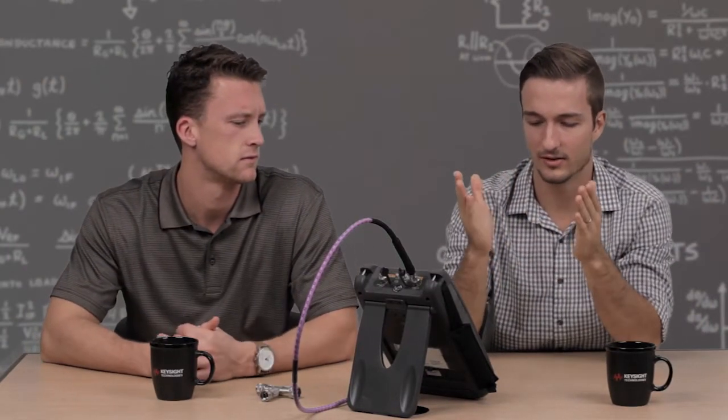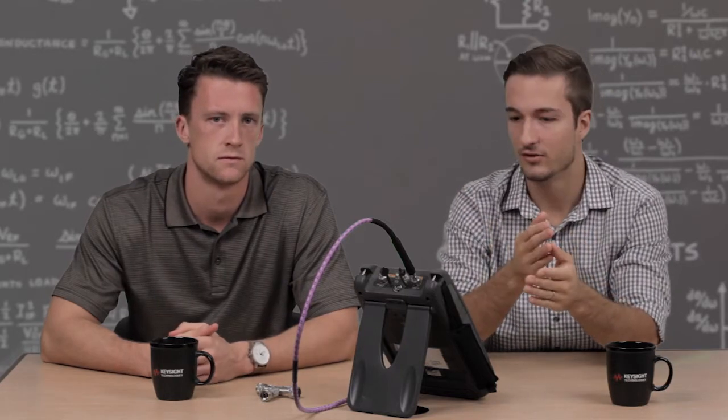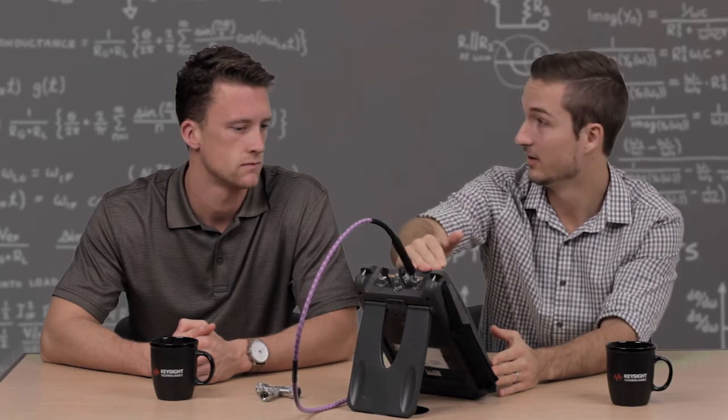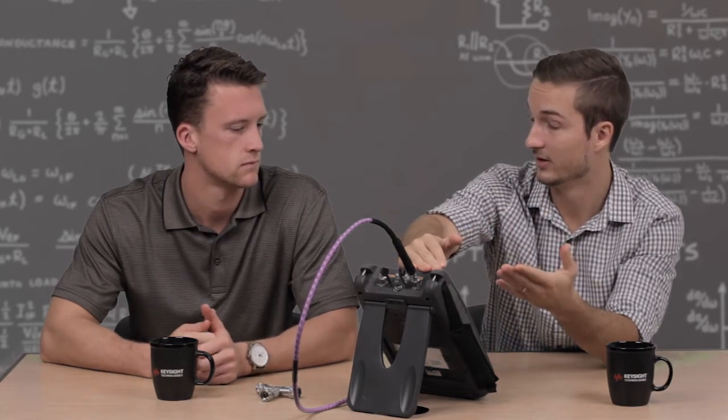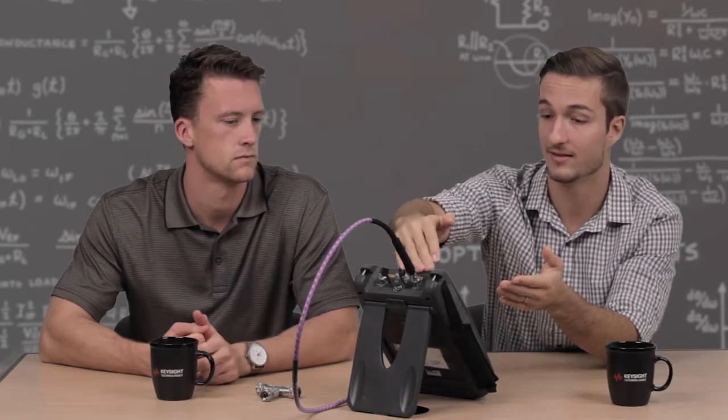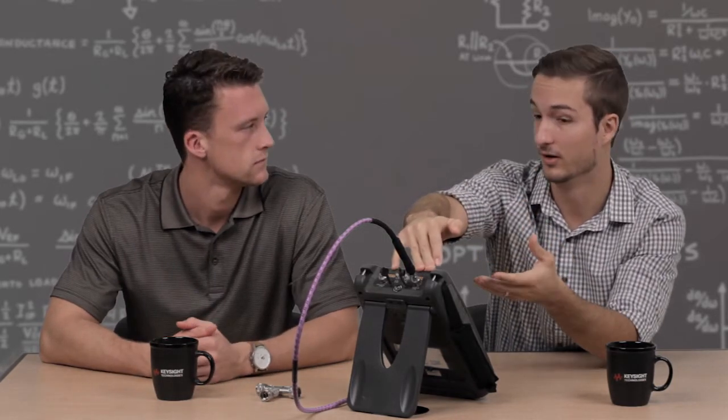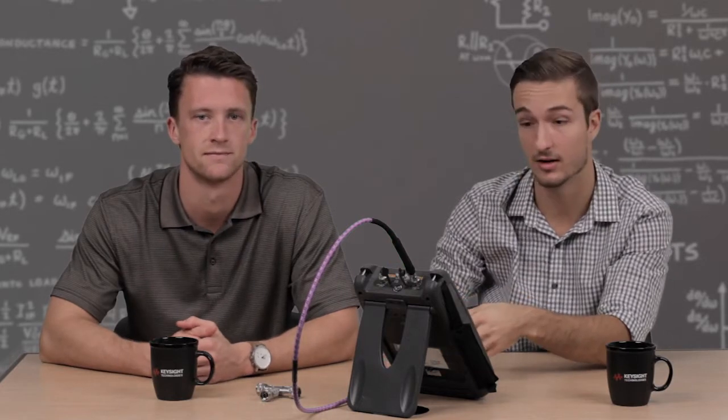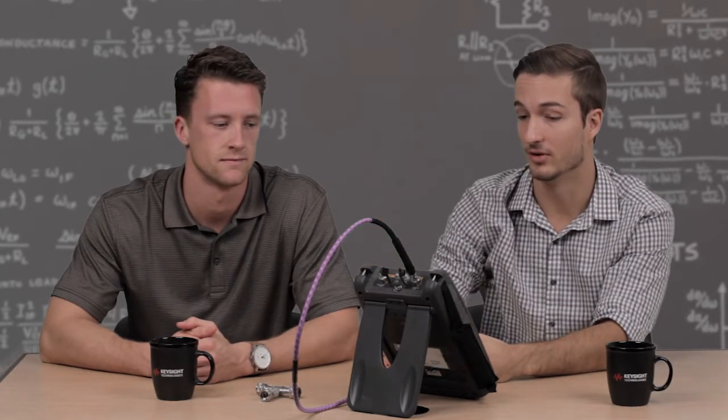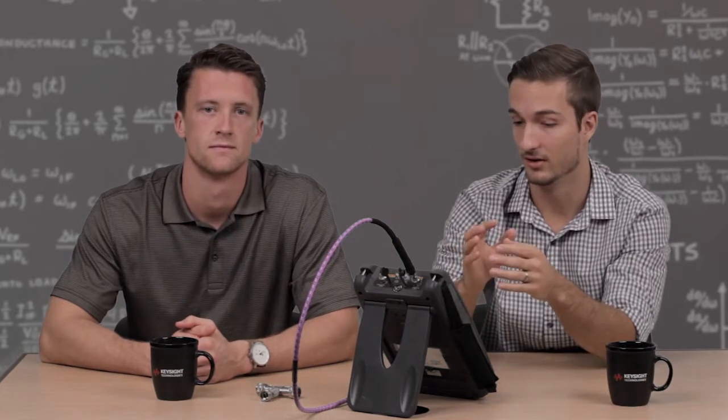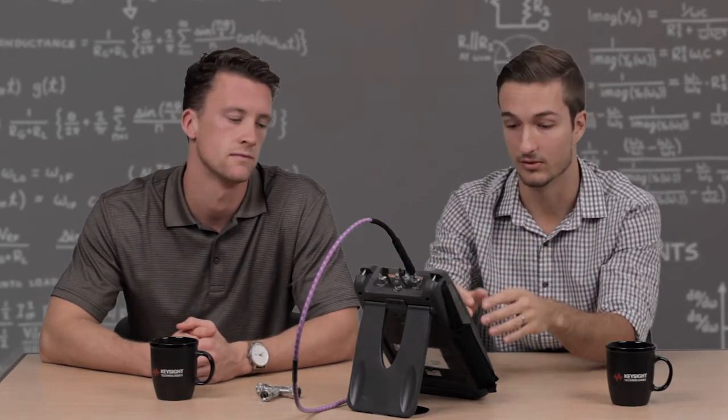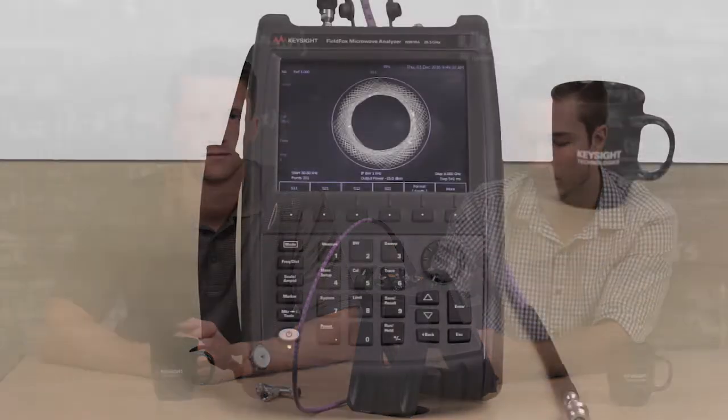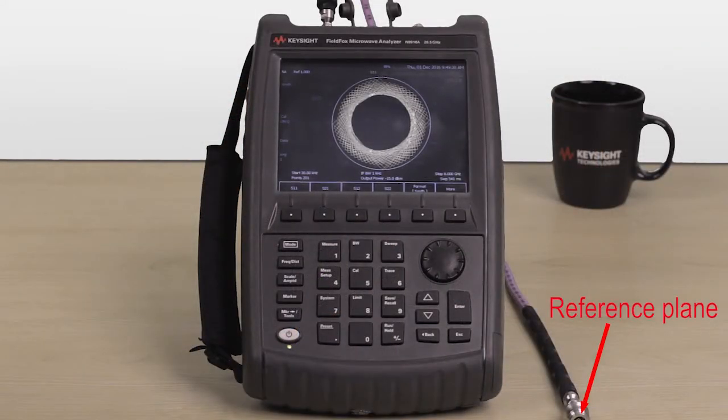No, it's not. And the reason is we haven't calibrated. So the FieldFox comes in a cal-ready state where the reference plane for its network analyzer measurements are at port one and port two of the FieldFox. So instead of having our device under test or DUT being the open, it's actually this cable and so that's why we see a lot of changes in impedance over frequency. So what we're going to do is calibrate the FieldFox to move our reference plane to the end of the cable.